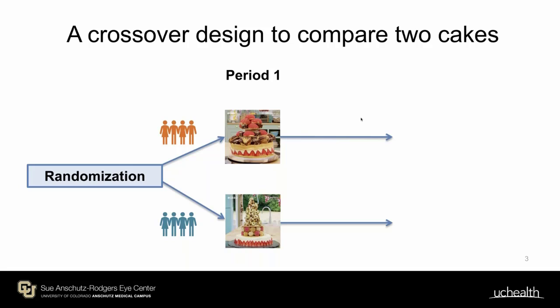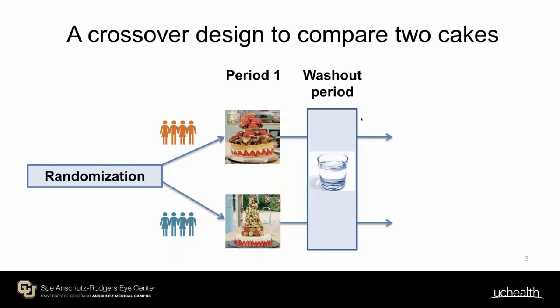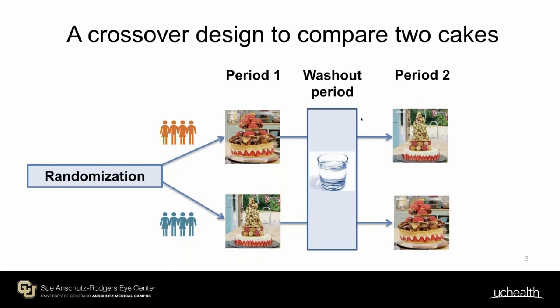Here's a crossover design to compare the two cakes. Instead of randomizing half of the participants to one of the two cakes, you randomize participants to two sequences. The first sequence starts with the first cake, followed by a washout period, and then the second cake — and vice versa for the second sequence. This is a very simple two-intervention, two-period, two-sequence crossover design.